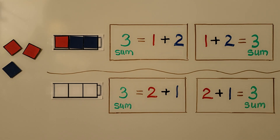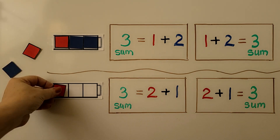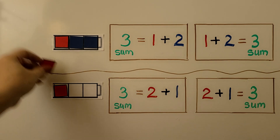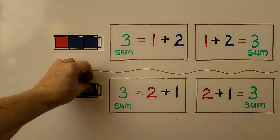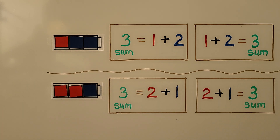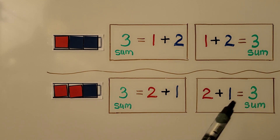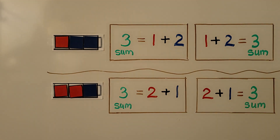We can also show 3 by using 2 red and 1 blue. So 3 is equal to 2 plus 1, or we can write 2 plus 1 is equal to 3. All of these addition equations are true because both sides of the is-equal-to symbol show the same amount — they show 3.